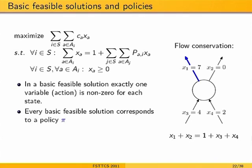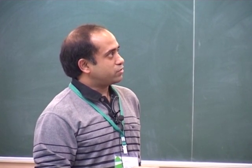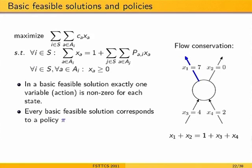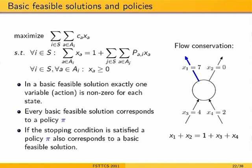A basic feasible solution for this LP is exactly a policy. With N states, a basic feasible solution has exactly N non-zero variables — one per state — since the flow conservation constraints each require at least one non-zero outgoing action. So the basis consists of exactly one action per state, which is precisely what a policy specifies. Conversely, any policy corresponds to a basic feasible solution.